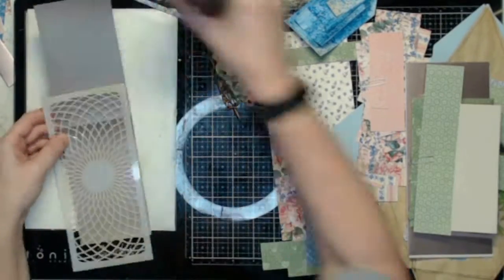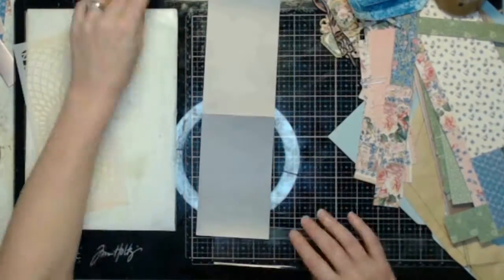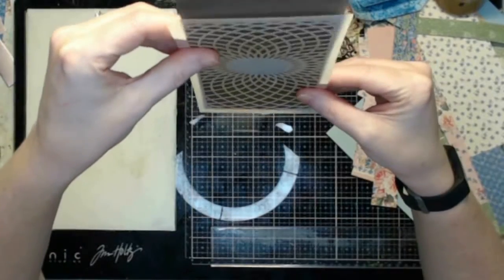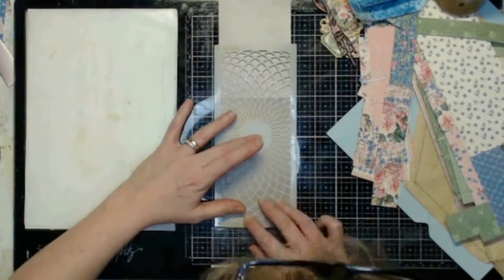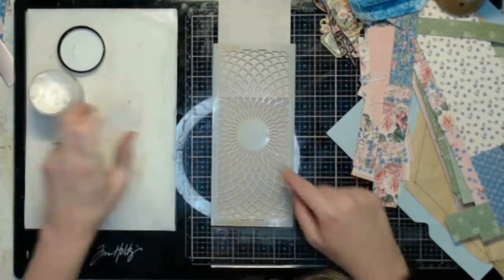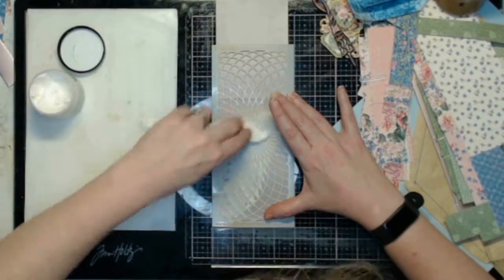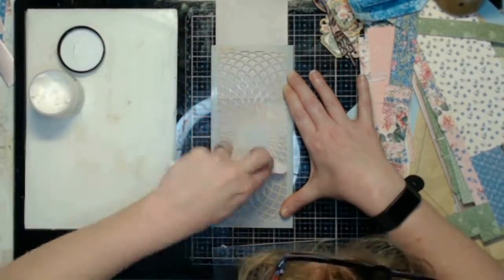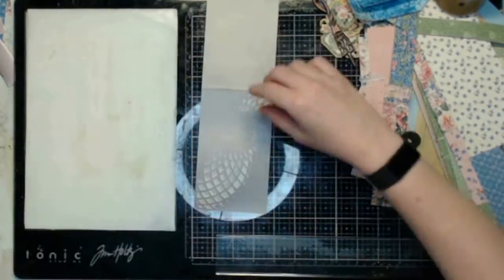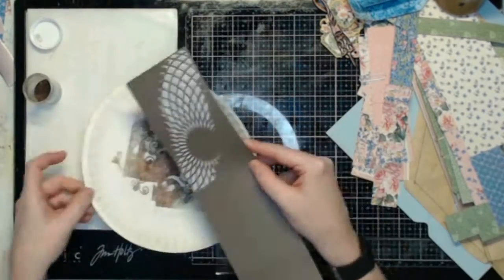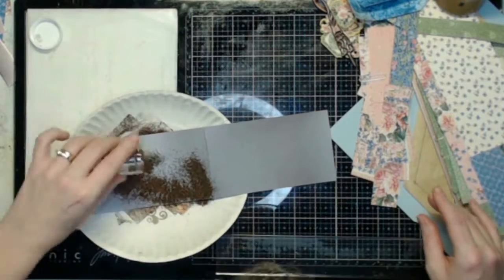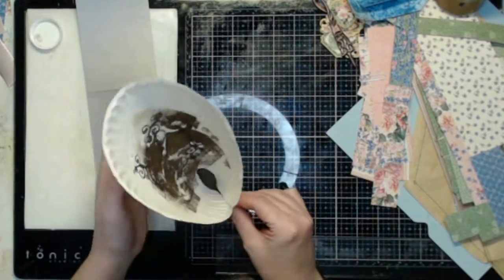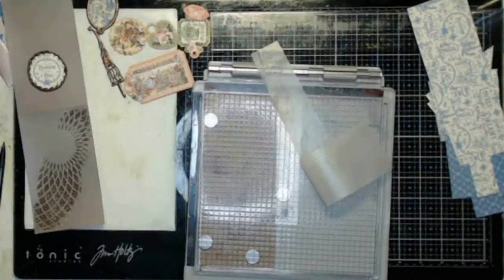This first card that I'm working on, I am using the stencil from last month's mixed media kit and I'm just going to kind of randomly put on some texture paste and then add some of the patina bronze copper embossing powder that I had used in my cottage life frame from last week's project since I do still have some of those chipboard pieces with that embossing powder already on them.